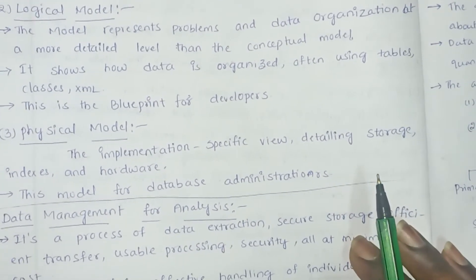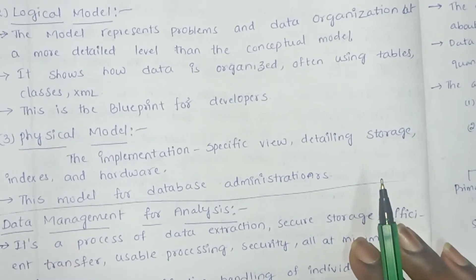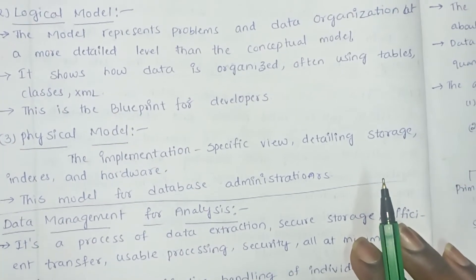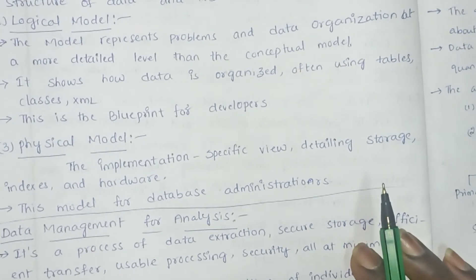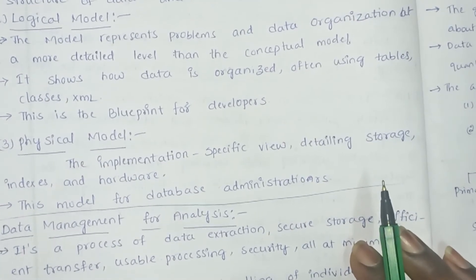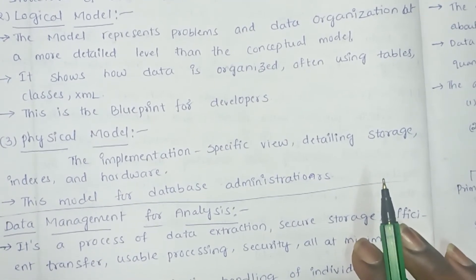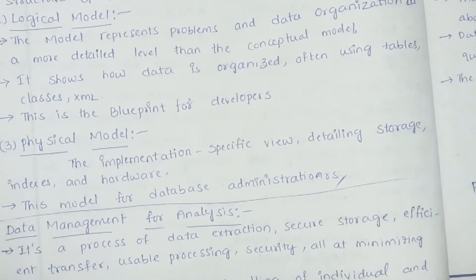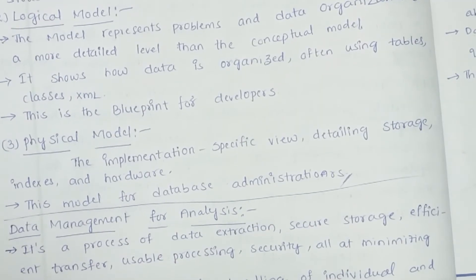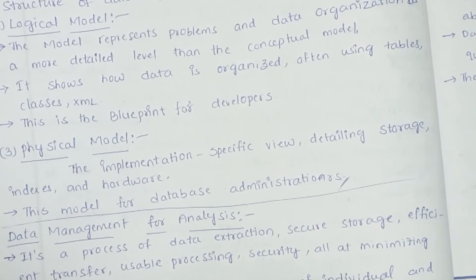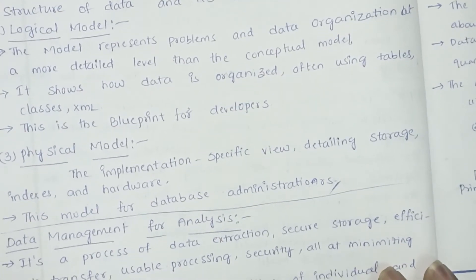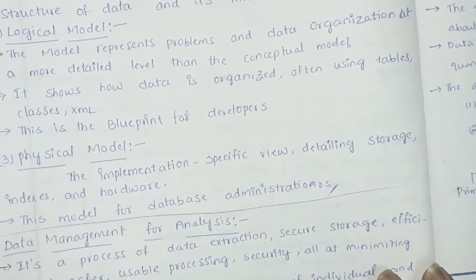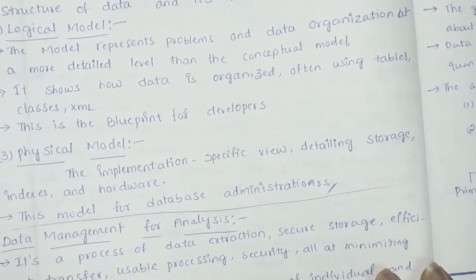The physical model is an implementation-specific view covering detailed storage, indexes, and hardware. It represents the physical connection and physical infrastructure. This model is used by database administrators, who manipulate or modify the database as needed.